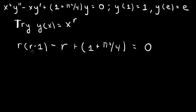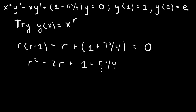After canceling x to the r, we end up with a quadratic equation. I can write that as r squared minus 2r plus (1 plus pi squared over 4) equals 0.